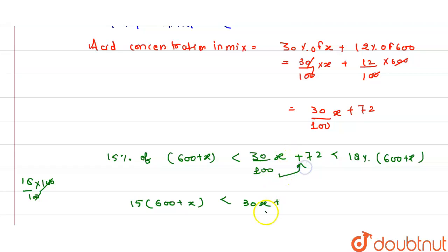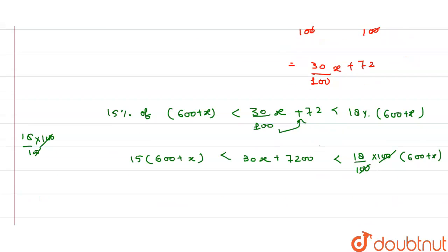100 here. This is 7200, which is less than 18/100 times (600 plus x). The 100s cancel to each other. Now we have the value